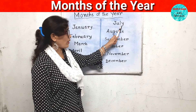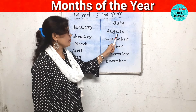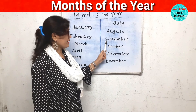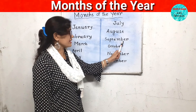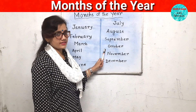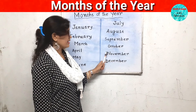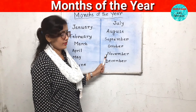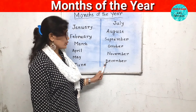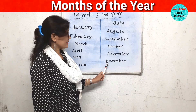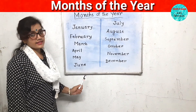The seventh month is July. J-U-L-Y. July. The eighth month is August. A-U-G-U-S-T. August. The ninth month is September. S-E-P-T-E-M-B-E-R. September. The tenth month is October. O-C-T-O-B-E-R. October. The eleventh month is November. N-O-V-E-M-B-E-R. November. The twelfth month is December. D-E-C-E-M-B-E-R. December. Let's see once again.